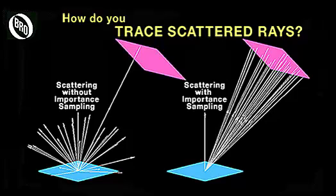How do you trace scattered rays? Generally, light scatters in all directions from a surface, but you only care about the rays reaching your detector. ASAP NextGen offers power and flexibility to control your scattered rays through a key feature called importance sampling, which is essential when conducting a classic stray light analysis.